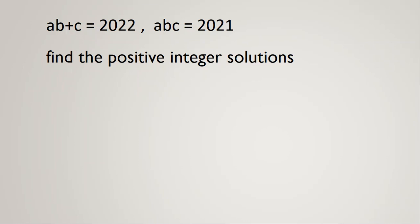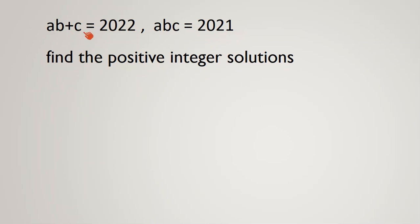A·B plus C equals 2022, and A·B·C equals 2021. Find the positive integer solution. We should find A, B, C, which are positive integers or natural numbers.